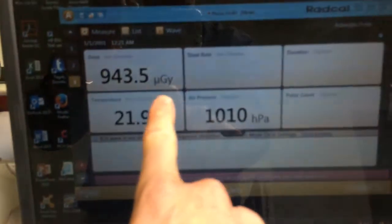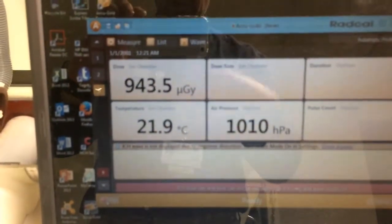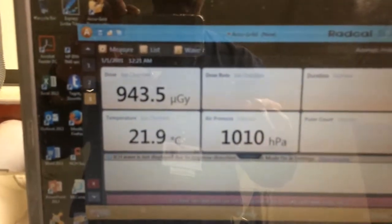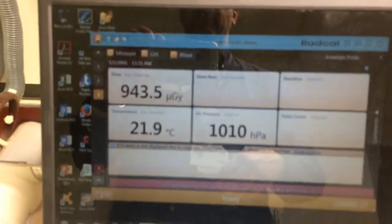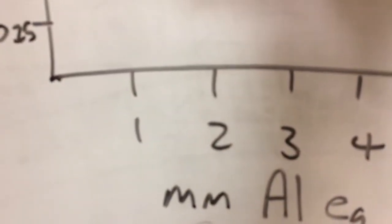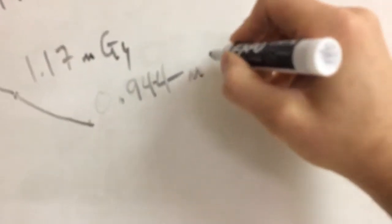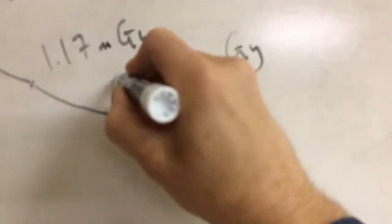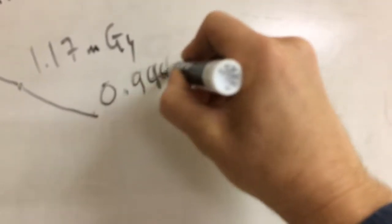That was 2 millimeters now. Now this machine, it changed the units to microgray, so we need to convert that to milligray. So it's 0.944 milligray. Again, it went down.